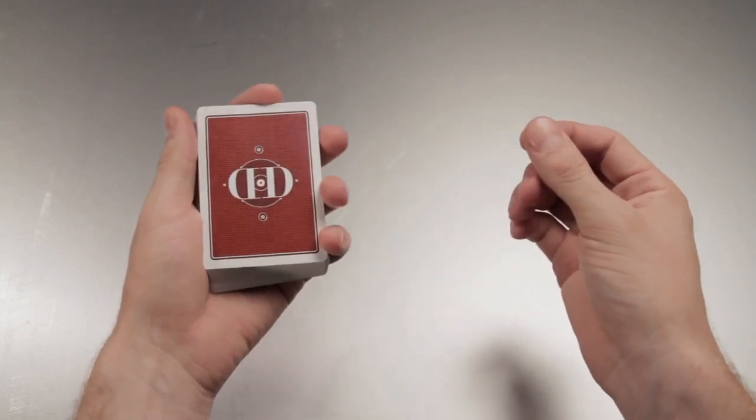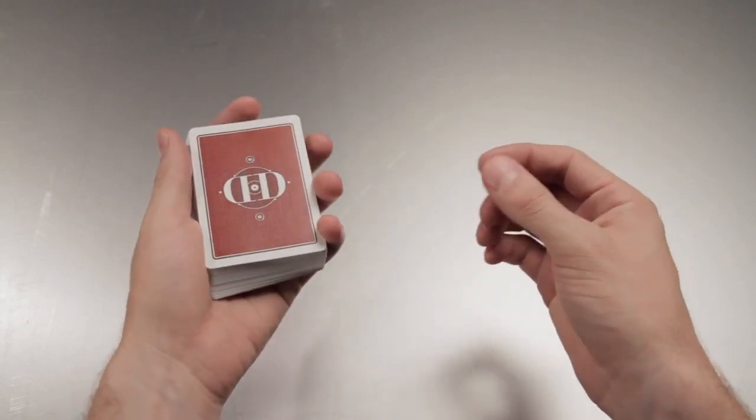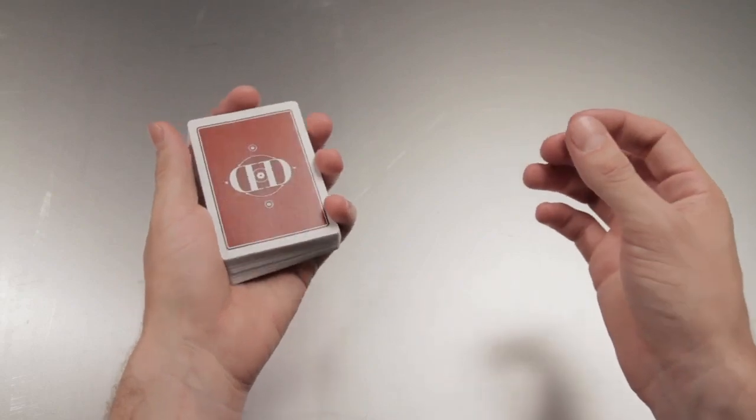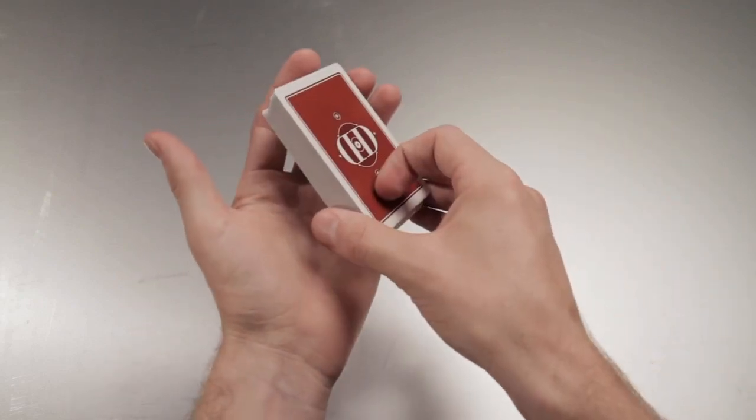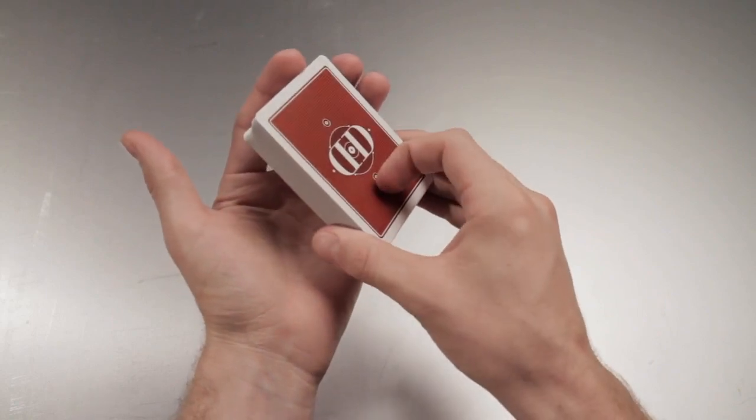The Hindu Shuffle. To begin, start with the cards in dealer's grip. Come over with your right hand and grip the right edge with the fingers and the left edge with the thumb at the inner end of the deck. Your index finger is curled on top.